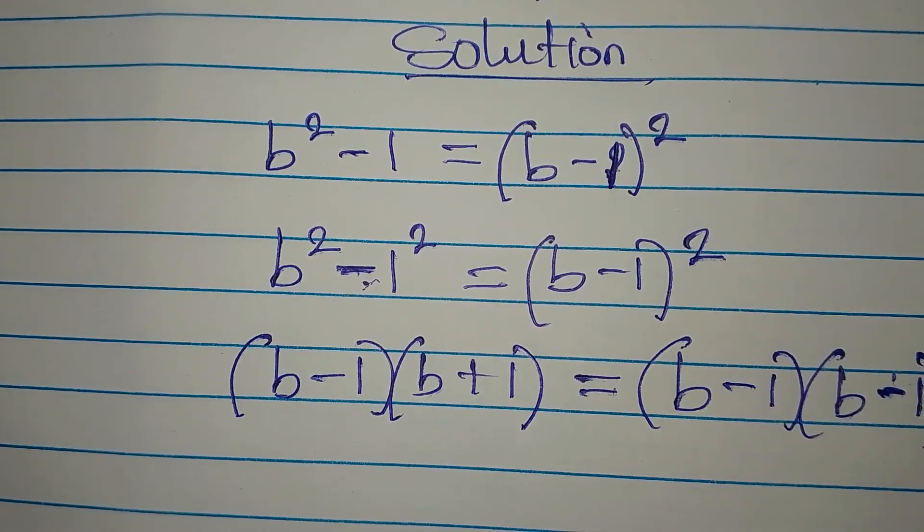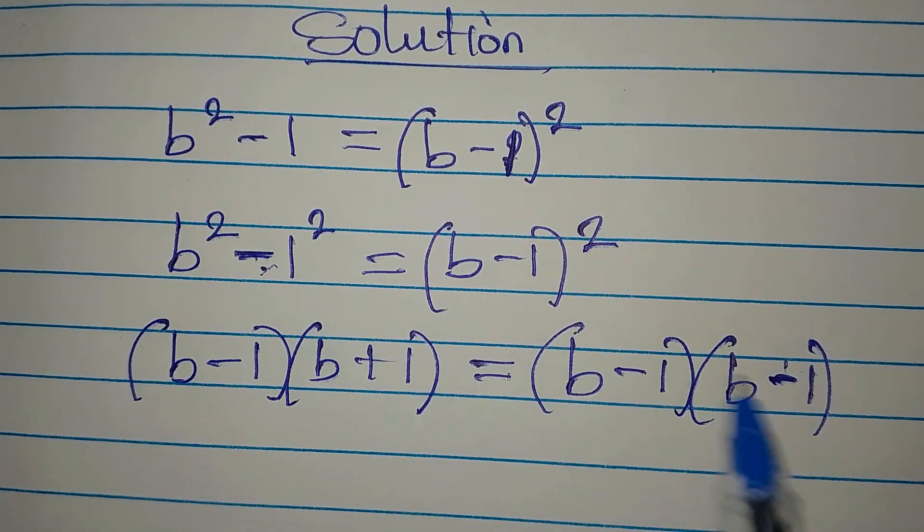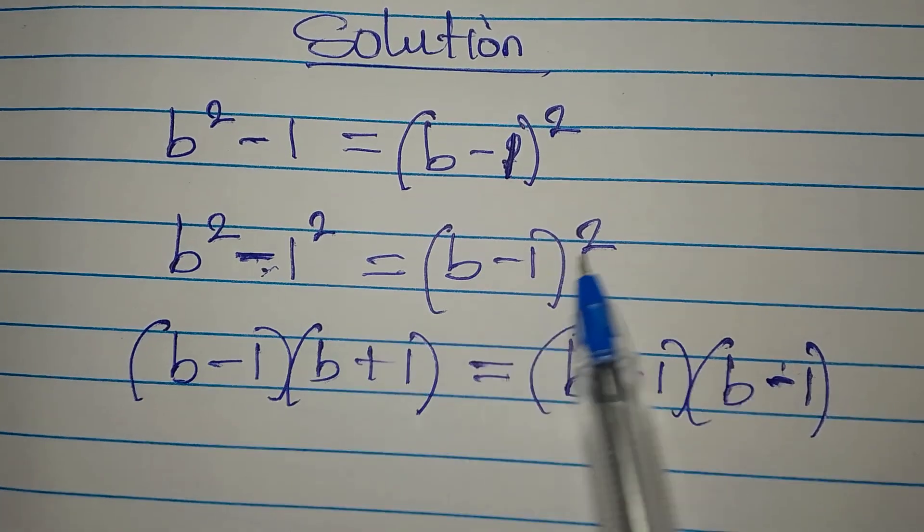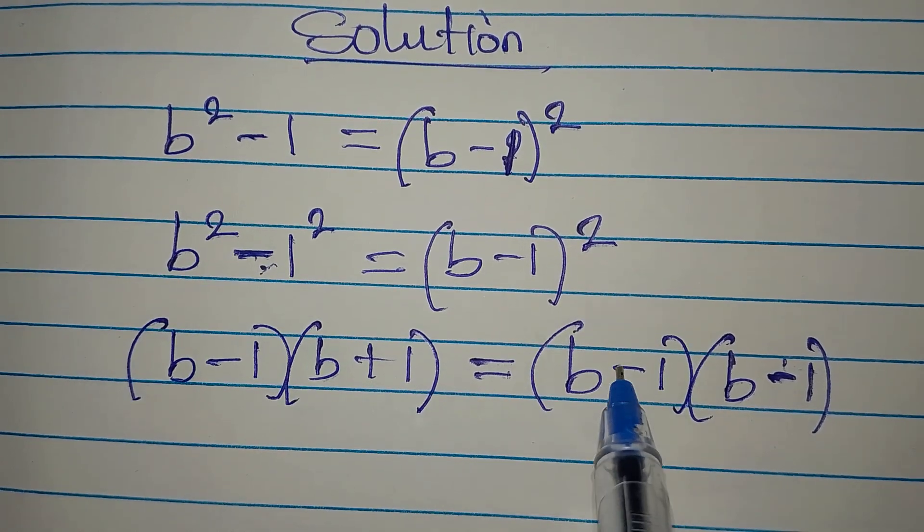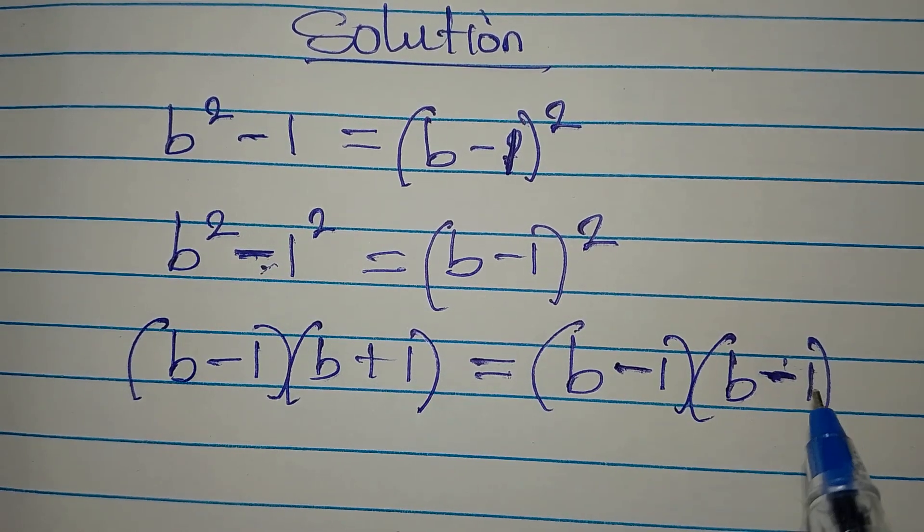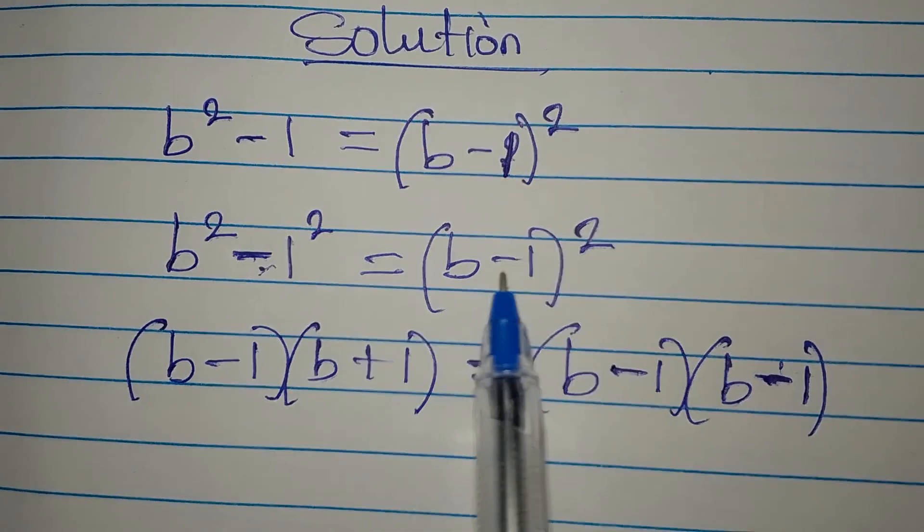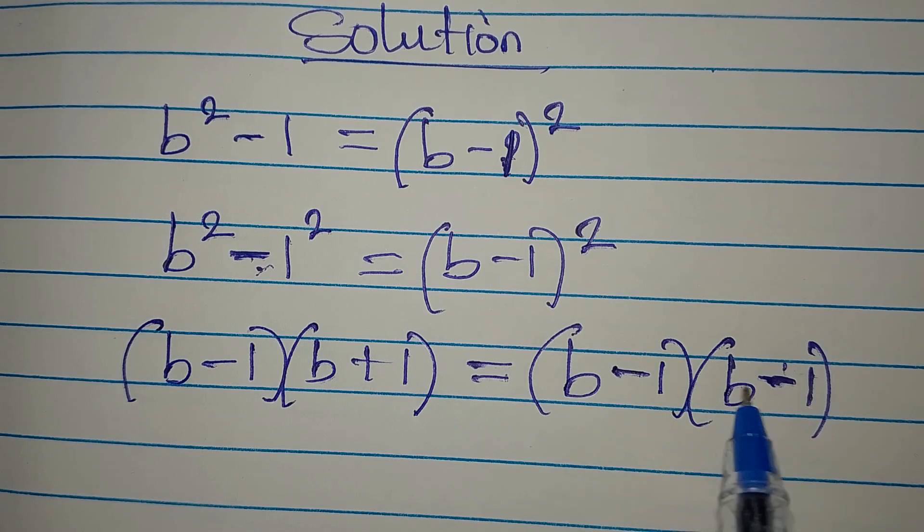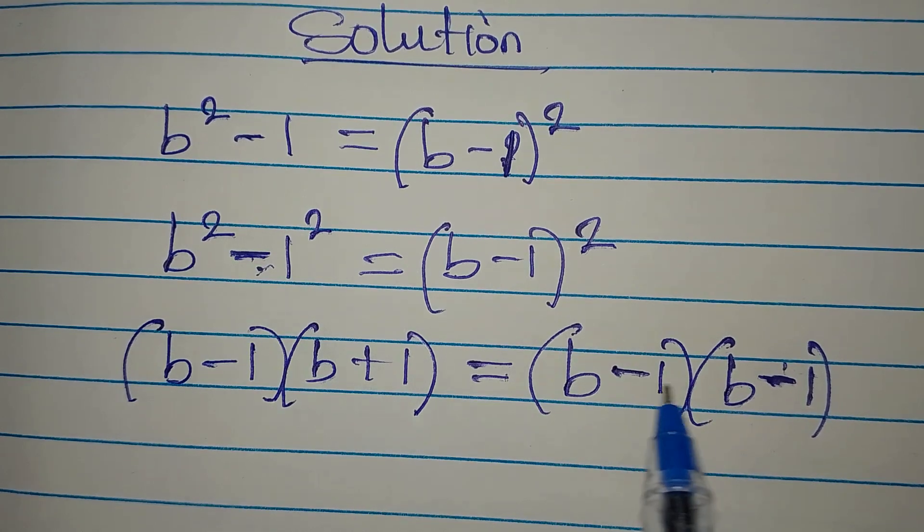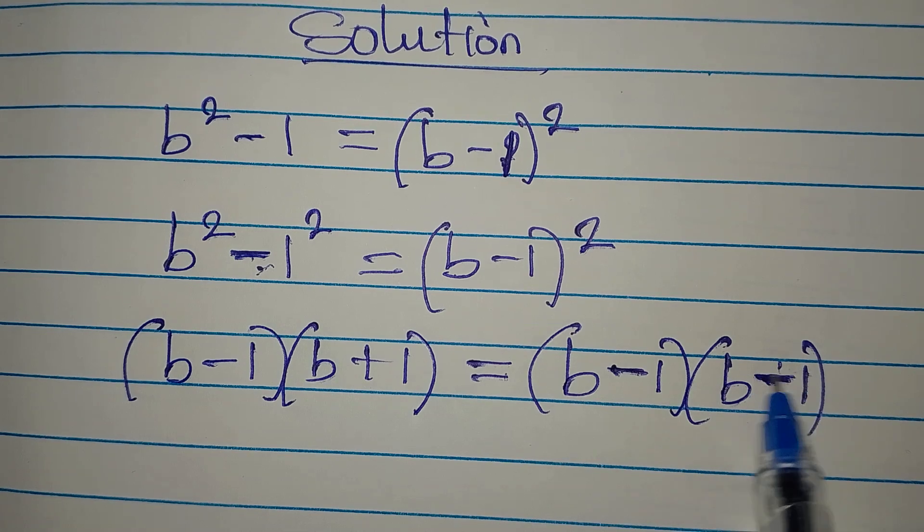Some students would say that since we are writing this in two places, one should be negative and the other should be positive, but that is not correct. It means that you have this exact term in two places and that is how you should write it. This is not difference of two squares, that one will be negative and the other will be positive.